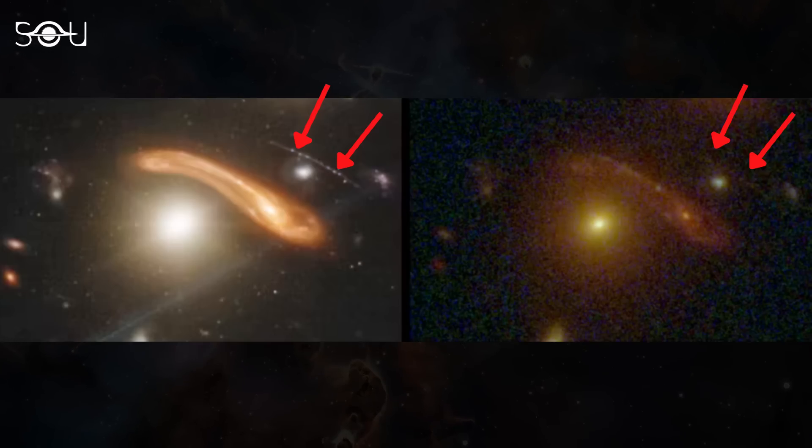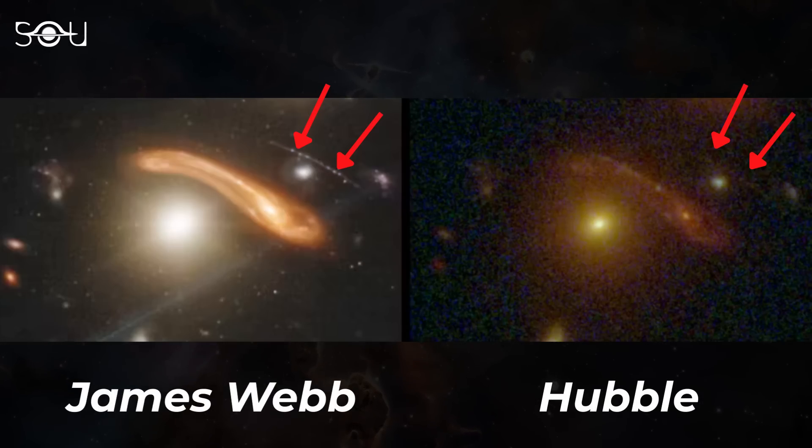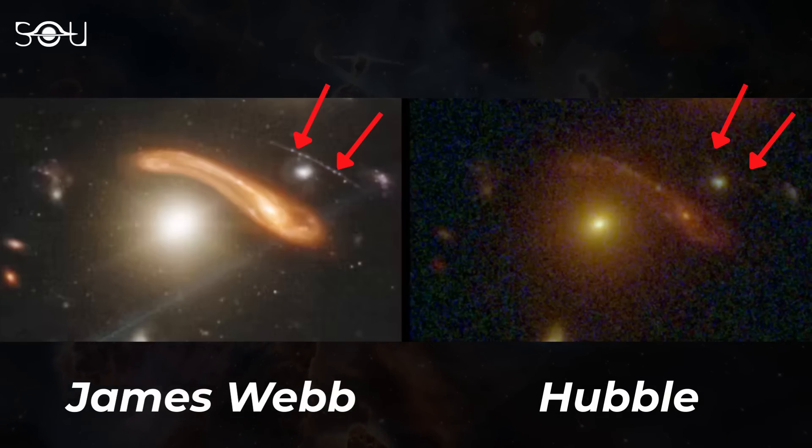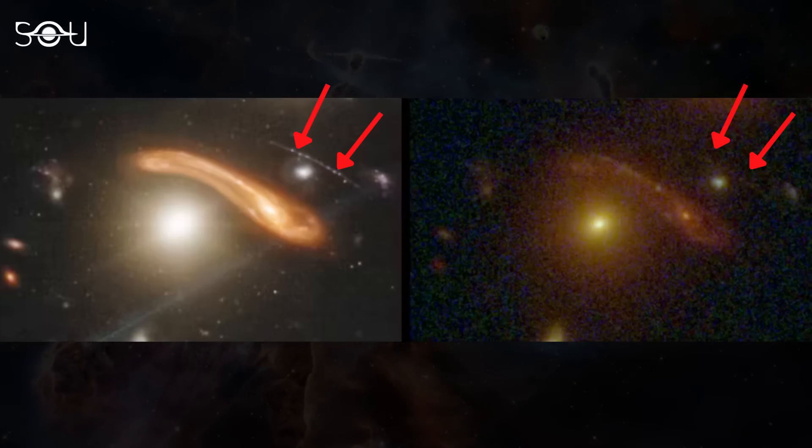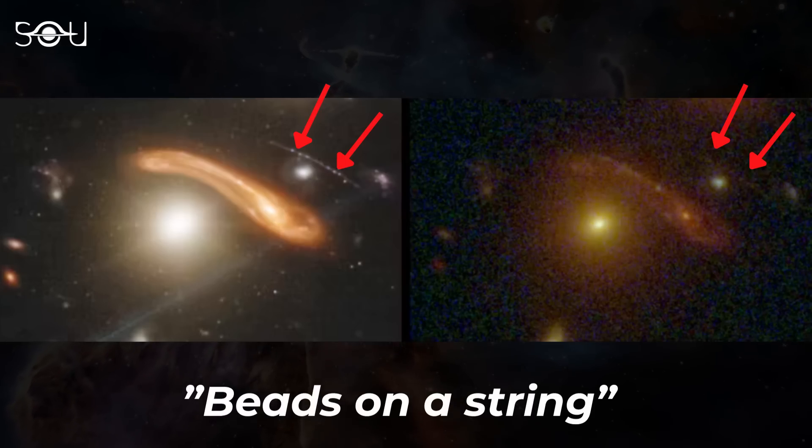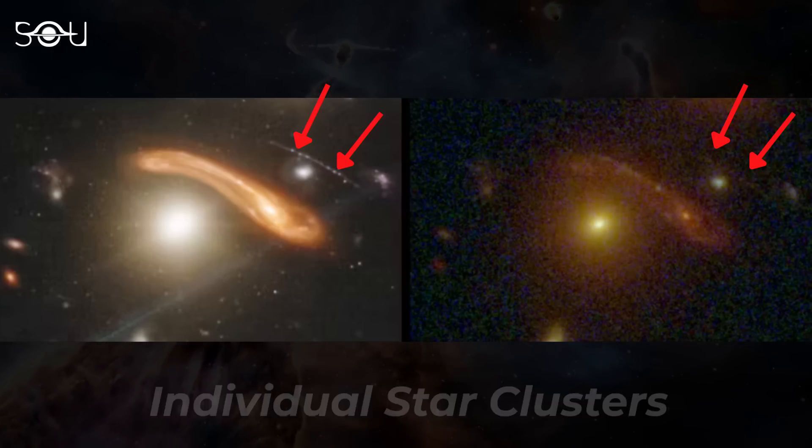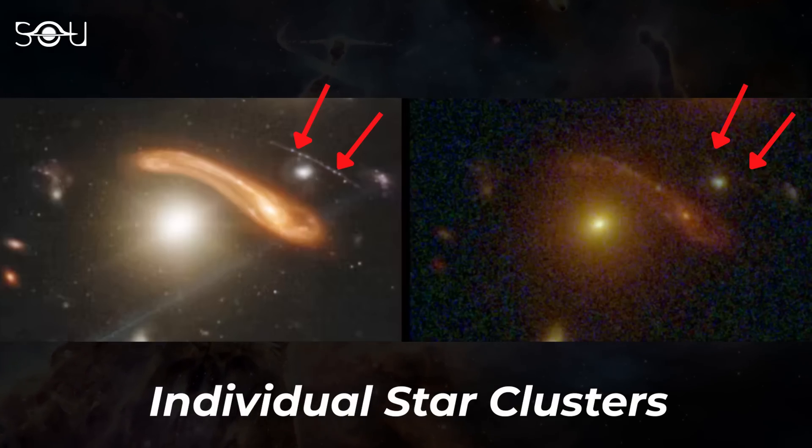This very thin arc is one of the most magnificent objects in this image, that truly demonstrates the power of the James Webb Space Telescope. Hubble barely detected this arc, but Webb sees the beads on a string clearly. They are likely individual star clusters in the extremely distant, tiny galaxy.